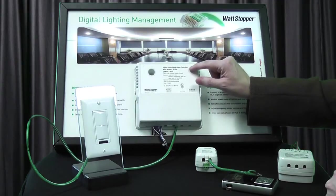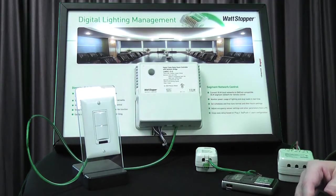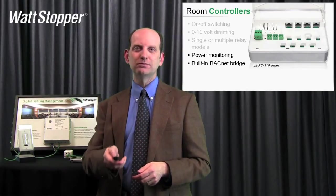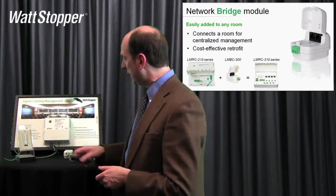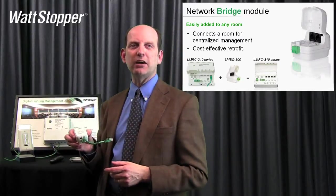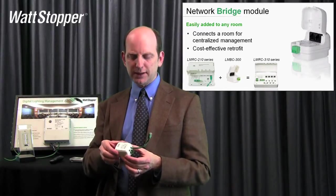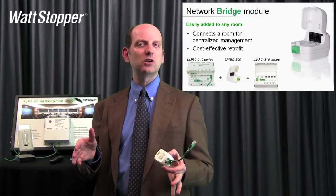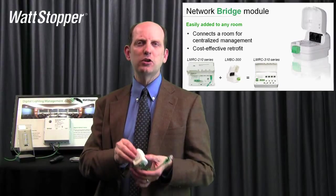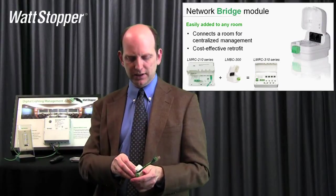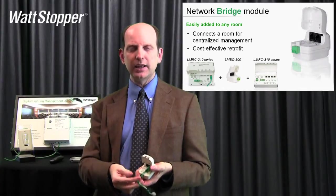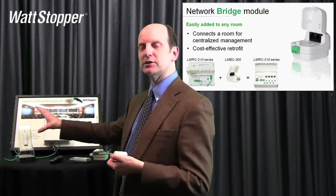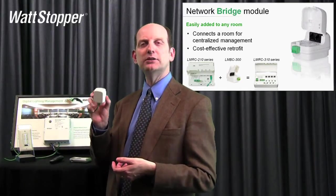The other device we want to talk about is the CT or current transducer. Every one of these devices has a current transducer so that you can actually see what the loads are. The network bridge module is a safety net for an engineer. What's cool about this little network bridge module format is that it can be added at any time. If you've got a job already laid out and installed using 100 or 200 series controllers, you can always come back and add one of these. It's just a simple standard DLM device with a Cat5 connector that attaches to it. It just plugs into any open port in the system and now you've got a network bridge for that room.